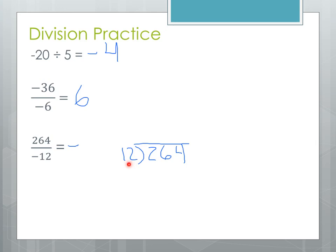Starting the long division: can 12 go into 2? No, it's too big. So we look at 26 — 12 goes into 26 twice, because 2 times 12 is 24. We write 24 underneath and subtract: 26 minus 24 gives 2. We bring down the next digit, 4, making 24. We know 12 goes into 24 twice: 12 times 2 is 24. Subtracting gives 0, so there's no remainder.